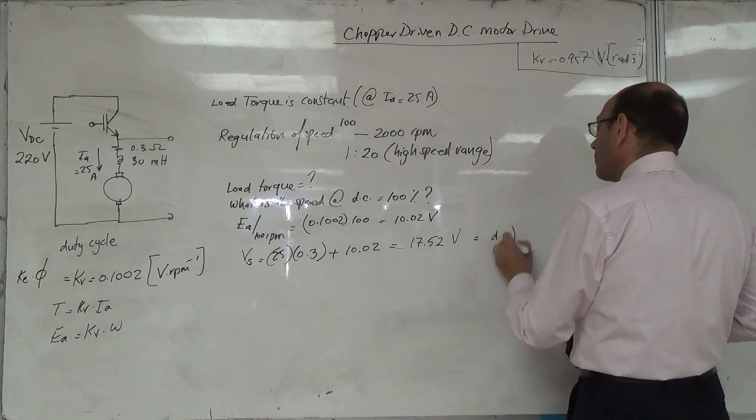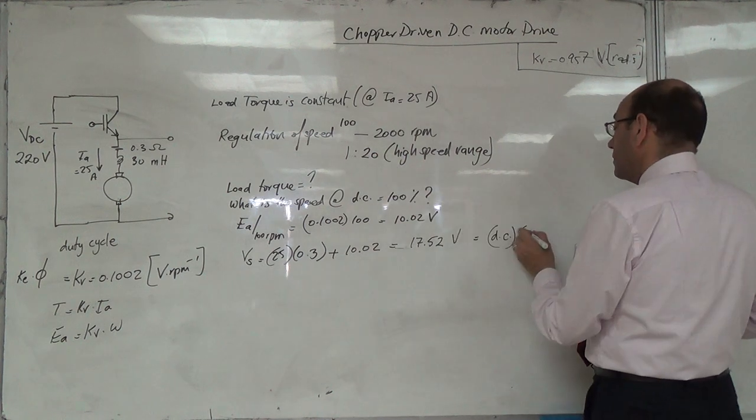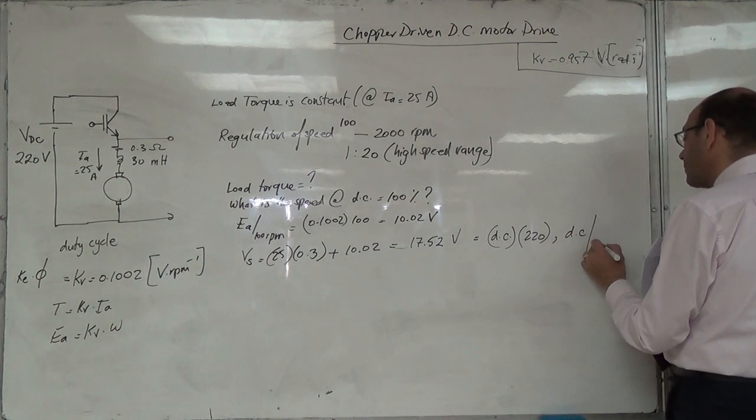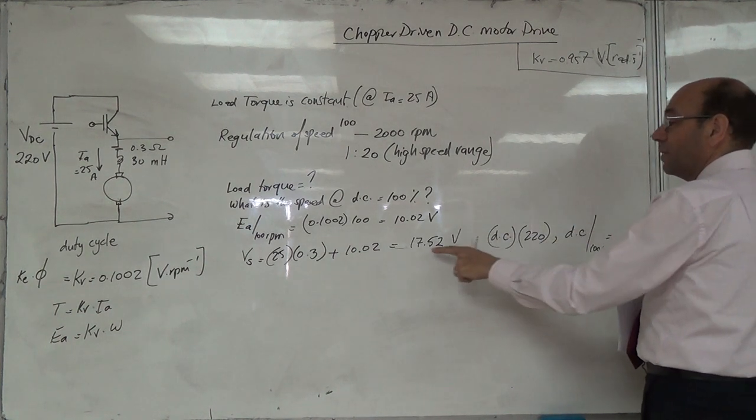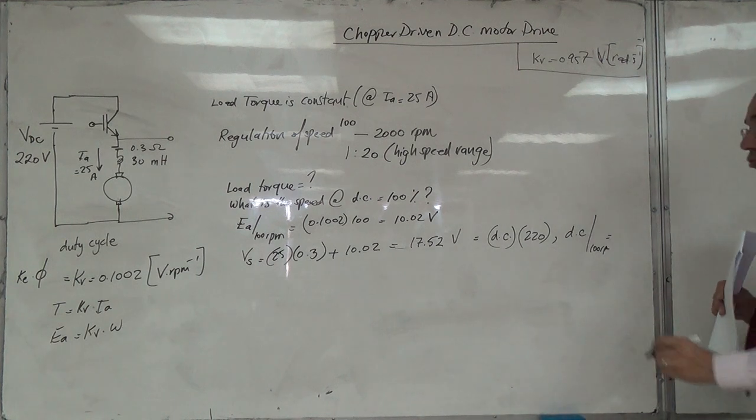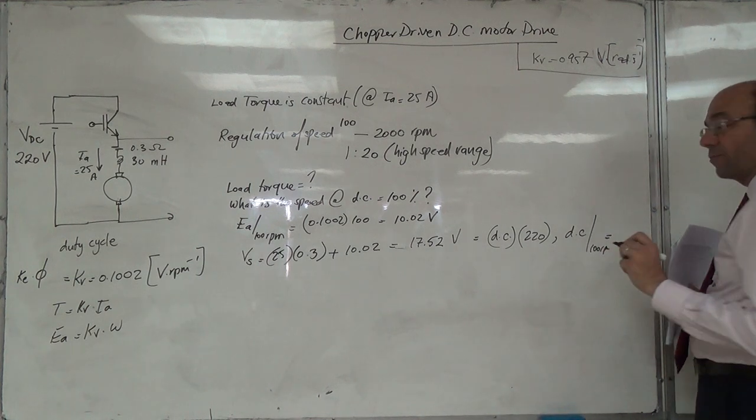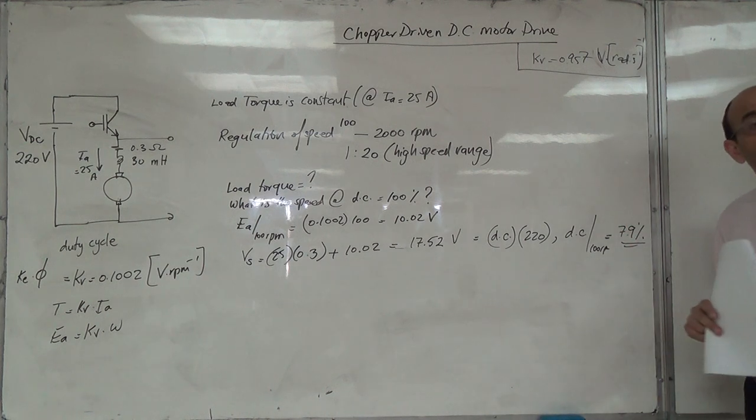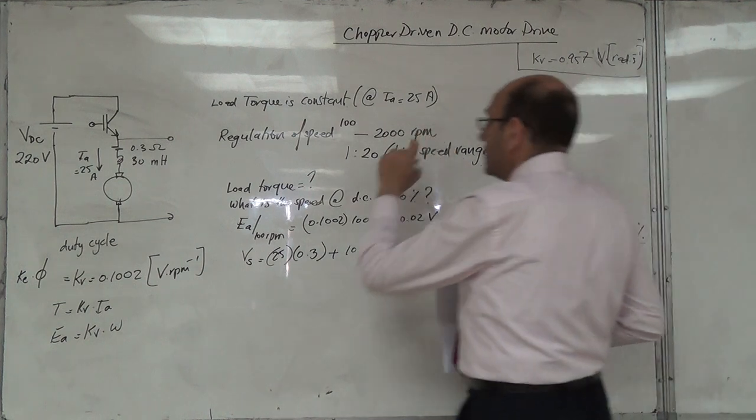The duty cycle, the duty cycle on 1000 RPM, it is 7.02. Then 79 percent, the duty cycle.